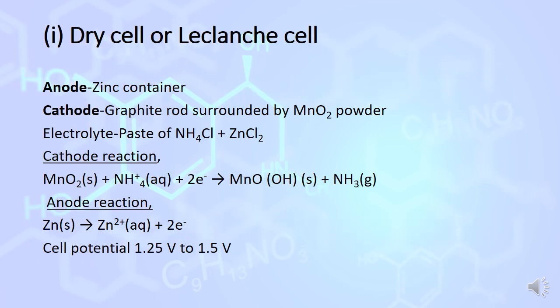Dry cell or Leclanche cell is an example of primary cell. In this, anode is made up of zinc and cathode is made up of graphite rod surrounded by manganese dioxide powder. Electrolyte uses paste of ammonium chloride and zinc chloride. During this process, at the anode, Zn is converted into Zn2+ ion after losing two electrons.